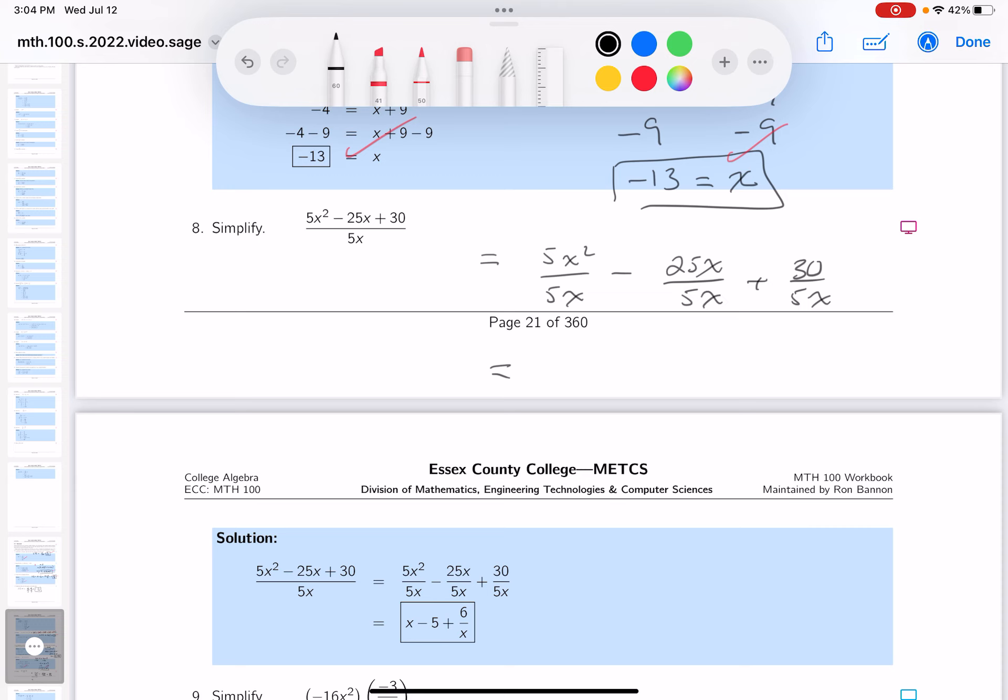Then do a simple reduction for each of those three terms. The first term would reduce to x, the second term would reduce to 5, and the third term would reduce to 6 divided by x.